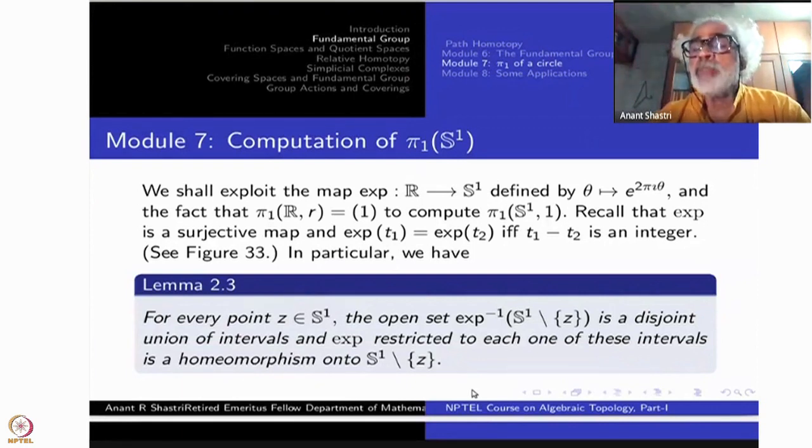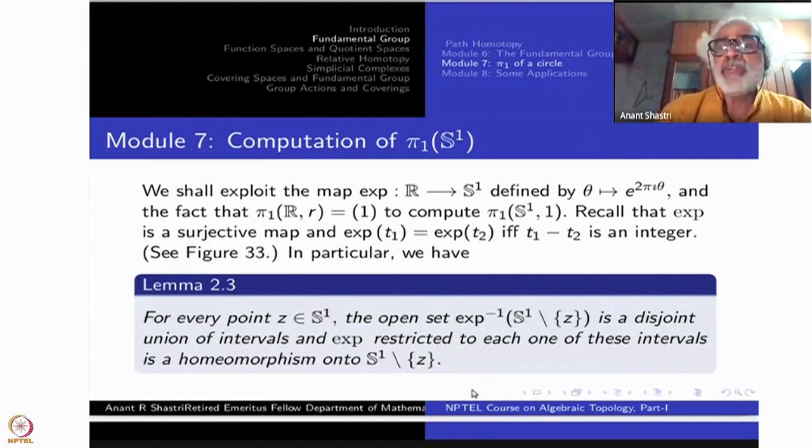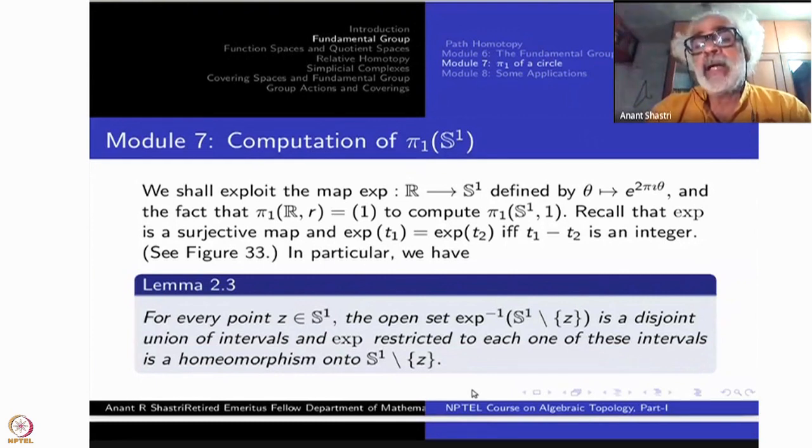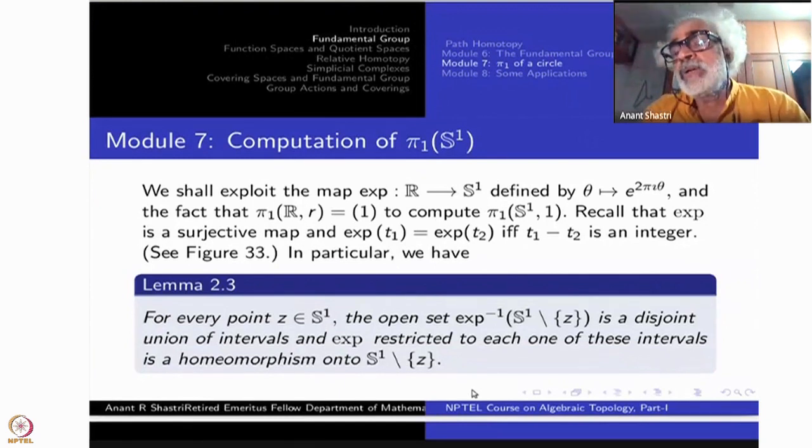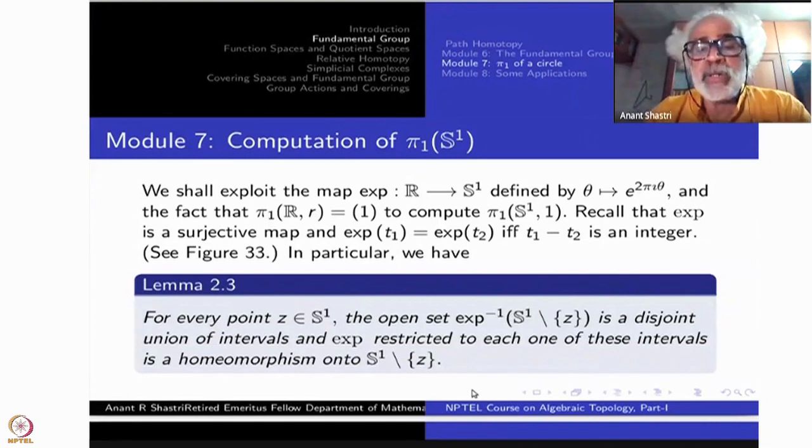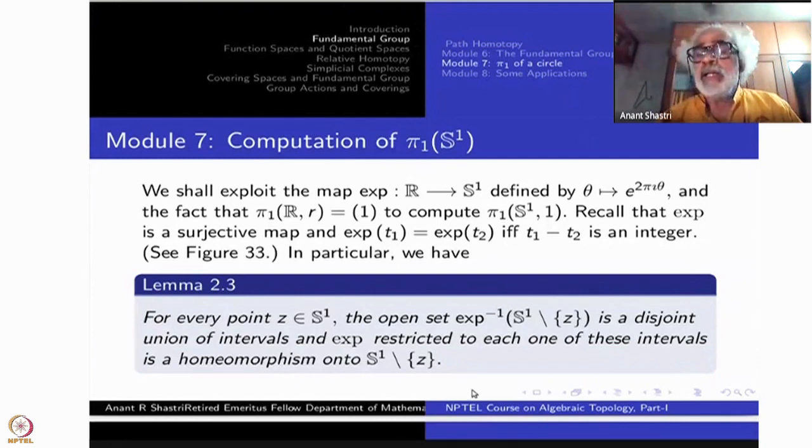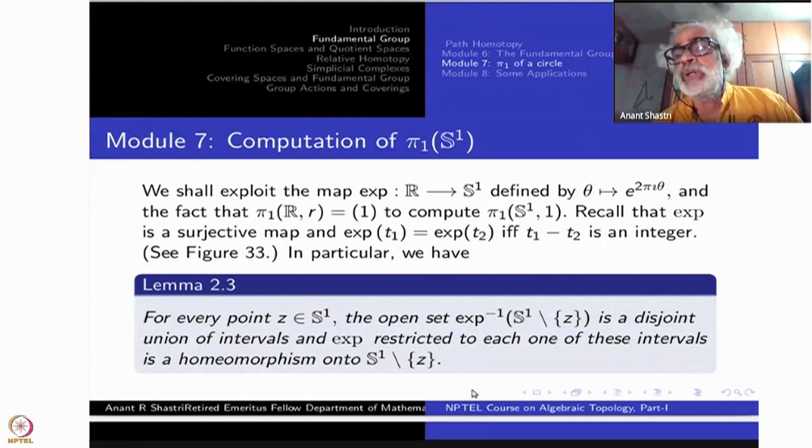So what happens? The inverse image of this one single point which you have thrown out, it will be all various points. Look at one single point, say R₀. Then the next point will be R₀ plus 1, because I have divided by 2π. And previous point will be R₀ minus 1, and R₀ minus 2, R₀ minus 3 and so on. The difference will be always an integer. Where R₀, e^(2πR₀) is your Z. In between these two intervals from R₀ to R₀ plus 1, it is an injective mapping onto S¹ minus that.